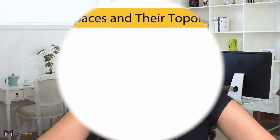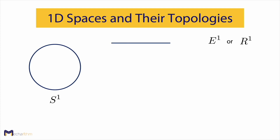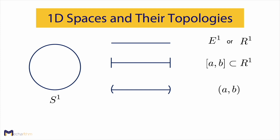Next, let's discuss some important n-dimensional spaces and their topologies. Starting with one-dimensional spaces: a circle is a one-dimensional space, and its topology is S1. A line is also a one-dimensional Euclidean or flat space, and its topology is called E1 or R1, referring to real numbers. A closed interval of a line is a subset of a one-dimensional space and is not topologically equivalent to a line, but an open interval of a line is topologically equivalent to a line because it can be stretched to a line.